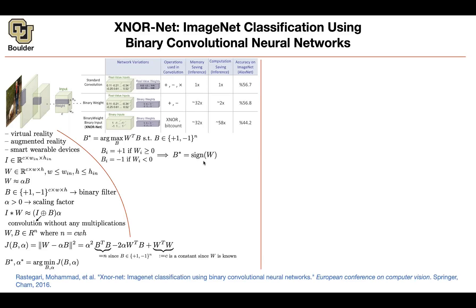Up until this point we've covered that from last session. Now we want to find α. You take the derivative of the objective function with respect to α, which gives 2αn − 2WᵀB = 0. Solving for α gives α* = WᵀB / n. We know the optimal B is the sign of W, so plugging it in: multiplying any weight by its sign gives its absolute value, and summing those gives the L1 norm divided by n. That's just the definition of the L1 norm.